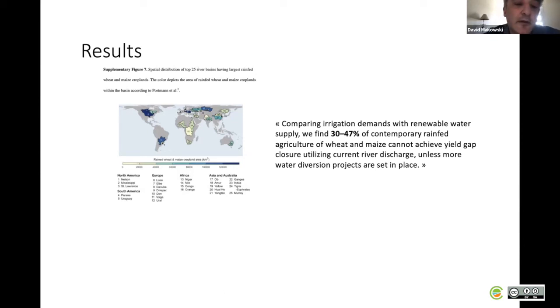The water availability in river in each basin was compared to the water demanded within basins for wheat and maize. Based on this assessment, it was estimated that between 30 and 47% of contemporary rainfed agriculture could not achieve yield gap closure based on the quantity of water available from river discharge.